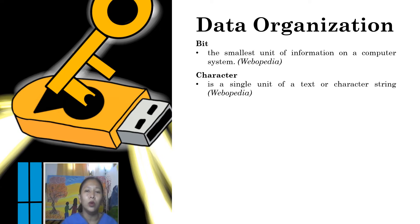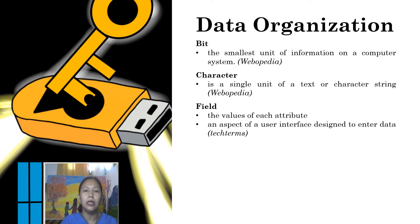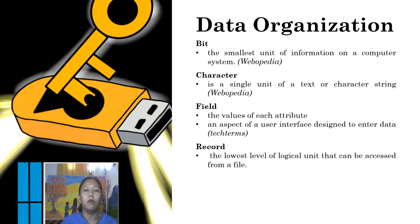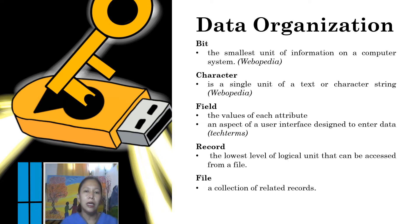We are only pertaining to a single unit of text in a string. Next, we have the field. If we say field, these are the values of each attribute, meaning it is an aspect of user interface designed to enter data. And then we have the record, which is the lowest level of logical unit that can be accessed from a file. And then what is file? If we say file, these are the collections of related records. Later on, it will be called as the database, or the collections of files.